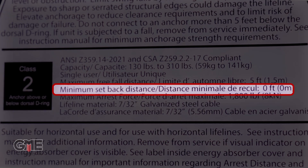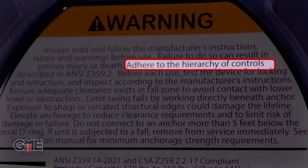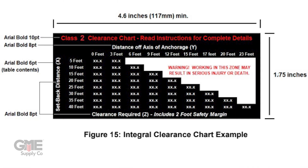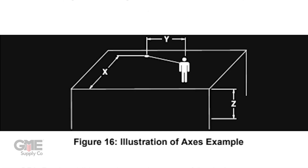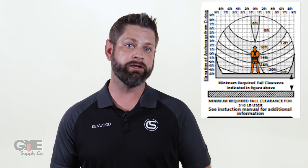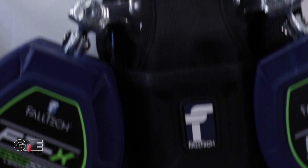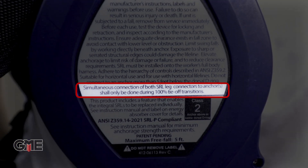Class 2 units now require even further labeling, such as minimum installation setback distance, clearance required when falling over the edge, a warning to adhere to the hierarchy of controls outlined in ANSI Z359.2, and labels illustrating a fall clearance table and diagram of the axes shown on the table, disclosure of minimum clearance requirements based on setback distance and lateral offset, and a warning that exposure to sharp or serrated structural edges could damage the device and that anchorage should always be elevated to the extent possible to limit the risk of damage or failure. Furthermore, markings to include a warning that dual connections shall only be made for the purpose of 100% tie-off transitions are now required for SRLPs.